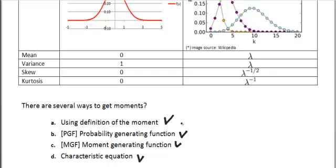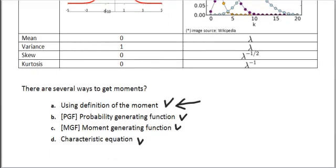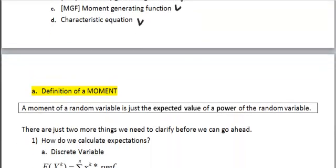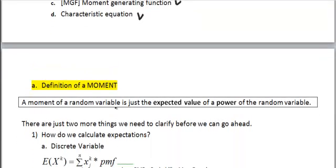In this video, we will purely concentrate on the first point, which is how we calculate moments using the definition of the moment itself. So, moment of a random variable is just the expected value of the power of that random variable. So that's actually a very simple definition, but it raises another question, namely, how do we calculate expectations?